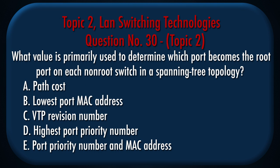Question number 30, Topic 2. What value is primarily used to determine which port becomes the root port on each non-root switch in a spanning tree topology? a. Path cost. b. Lowest port MAC address. c. VTP revision number. d. Highest port priority number. e. Port priority number and MAC address.